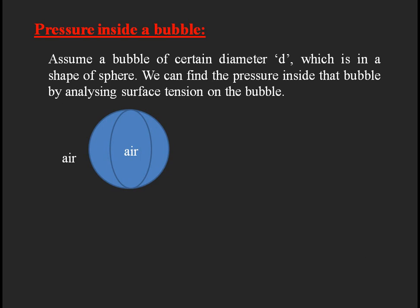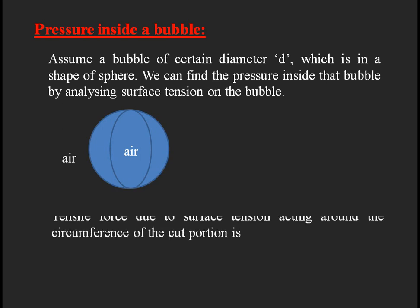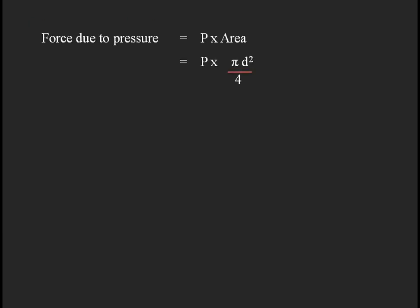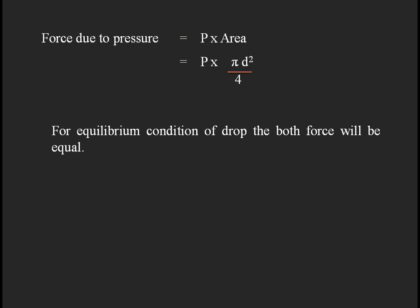The tensile force due to surface tension acting around the circumference of the cut portion is two times σ × π × d, because the bubble is twice in contact with air. The force due to pressure is p × πd²/4. For equilibrium: 2σ × πd = p × πd²/4. Cancelling similar terms, we get p = 8σ/d, the formula for the pressure inside a bubble.